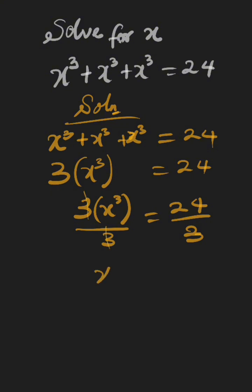3 cancels 3, left with x raised to the power of 3 equals... 3 into 24 gives us 8.